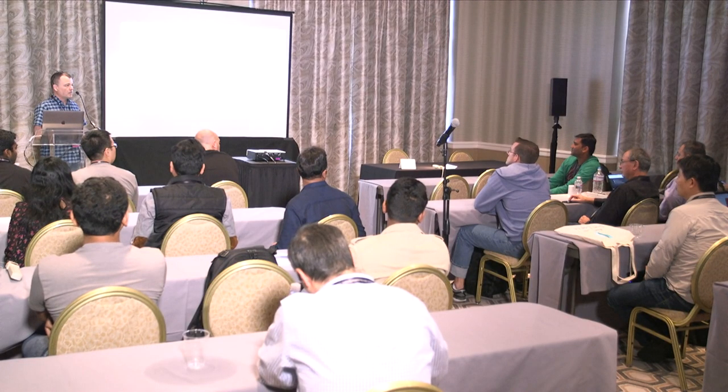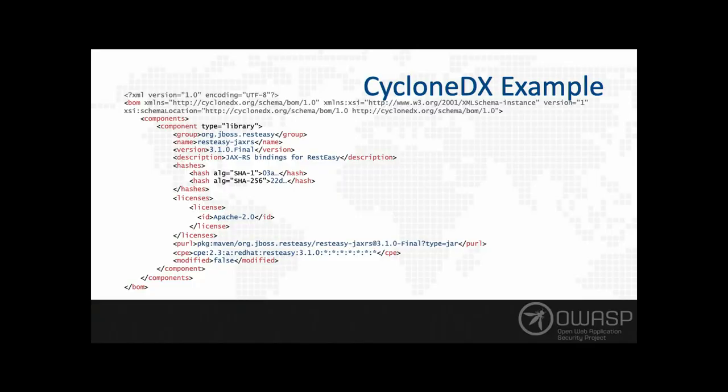For third-party JavaScript and Package URL: it would be pkg:npm/[optional-organization]/[component-name]@[version] — that's really it. And there's actually a CycloneDX NPM module that will automatically create your bill of materials from package.json, so if you have a Node project you can create the BOM with one command.